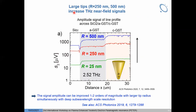Recently, we demonstrated that a larger tip radius can boost the near-field signal, which has been published. This is a very important point for terahertz s-SNOM particularly, because of the weak signal-to-noise ratio. We further studied how the terahertz near-field signal of GST depends on the tip radius. Here we show nano-scan near-field measurements at 2.52 terahertz for three different tip radii. The amplitude signal on the substrate and on the GST film are significantly improved by increasing the tip radius, because the large tip radius provides a larger dipole moment. Meanwhile, we still get deep sub-wavelength scale resolution.